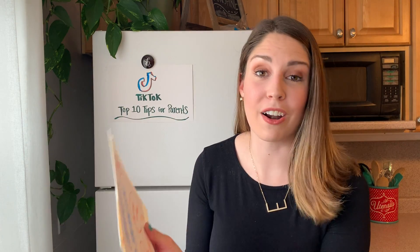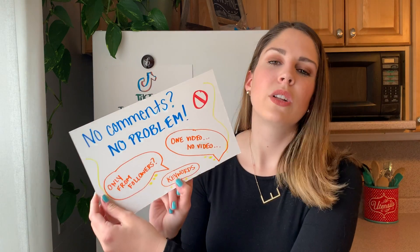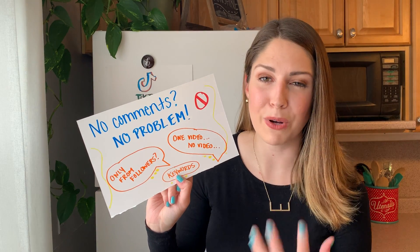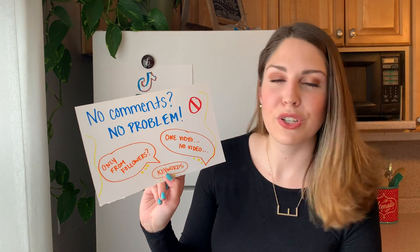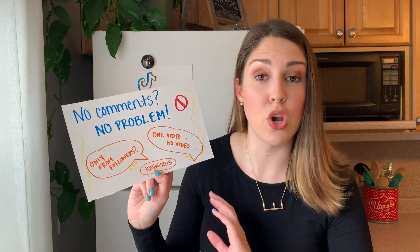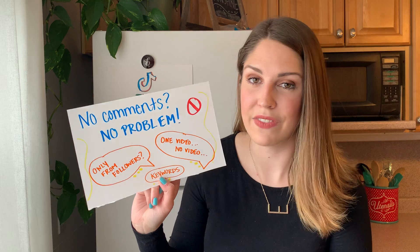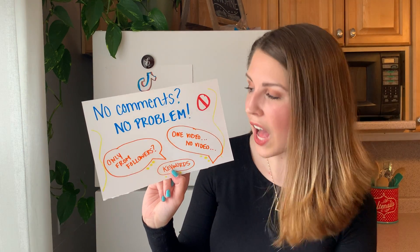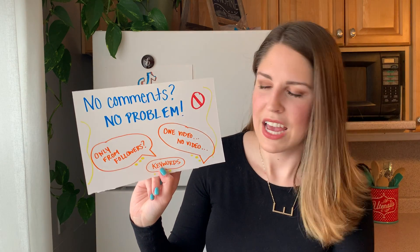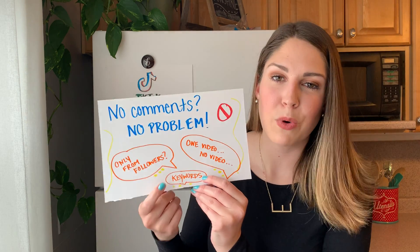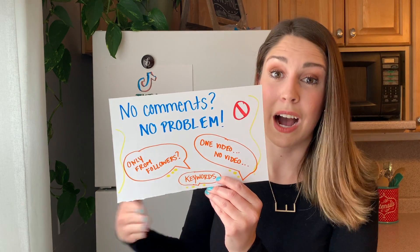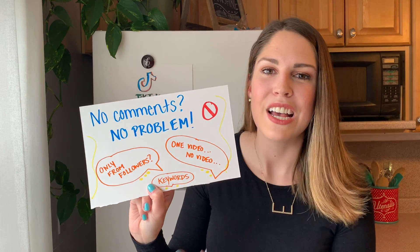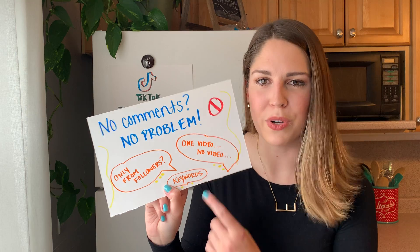The other tip is regarding comments. A lot of parents get nervous about comments, especially in today's world with bullying. There's a way to restrict that — you can either allow no comments whatsoever on your child's videos, allow comments on some videos, or only allow their followers to leave comments. There's also a way to restrict certain keywords. Say there's a word you don't want commented on your child's video — you can restrict that word as well. There are a lot of different options if you go into the settings.